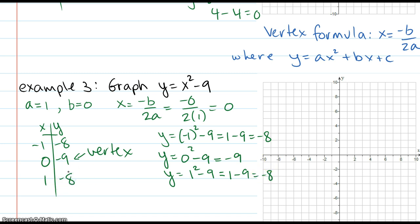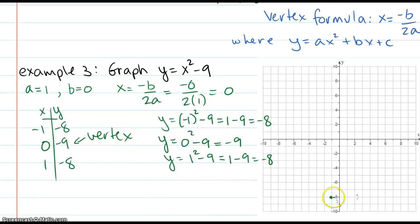So negative 1, we know, is down negative 8. 0 is down negative 9. 0, that's a vertex. And 1 is also negative 8. And that would be my parabola. This is just really a downward shift from the basic.